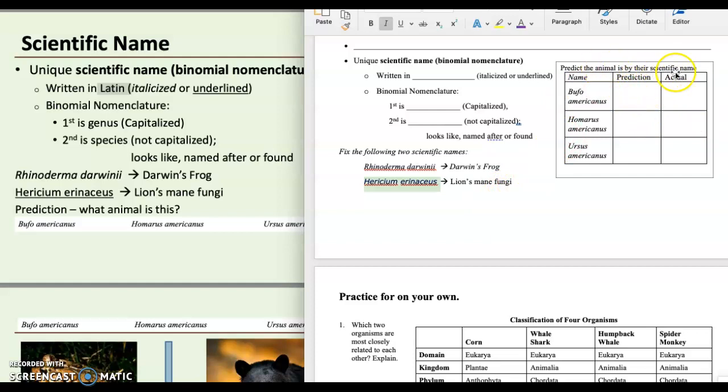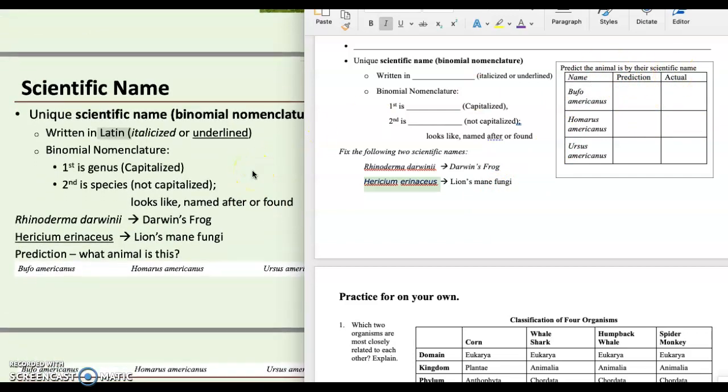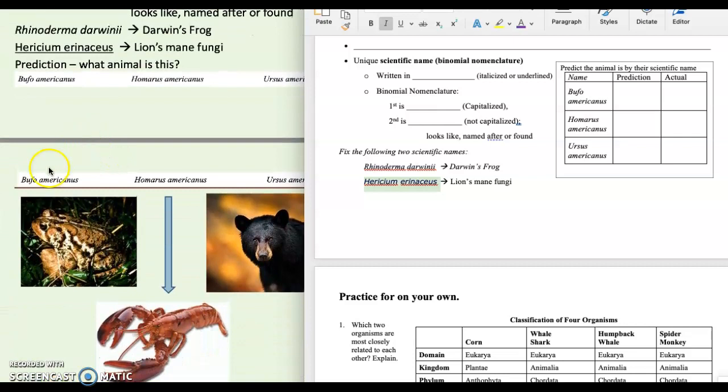So predict the animal by its scientific names. I want you to see what this one is. So we've got Bufo americanus. Write or say what your prediction is. Then we have Homarus americanus. Guess what you think it is. And we have Ursus americanus. So americanus, americanus. Interesting. So we have our genus species, genus species, and so on. So what do we end up with? The Bufo americanus is a American bullfrog. So you can write that in there. That's the American bullfrog. And then we have Homarus americanus. This is the lobster. And then the black bear is the Ursus americanus. So these are all native to the Americas, hence the species being similar, and then this different genus.